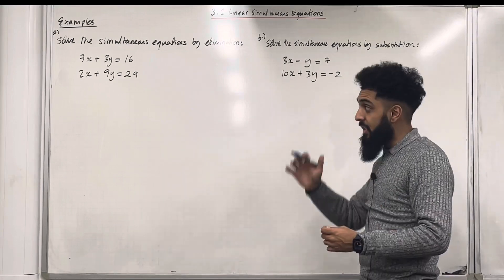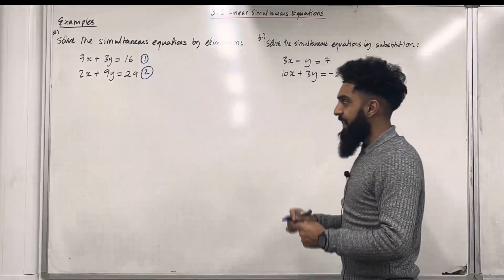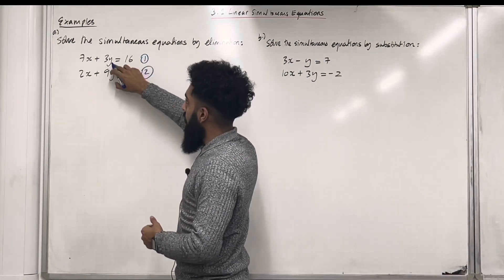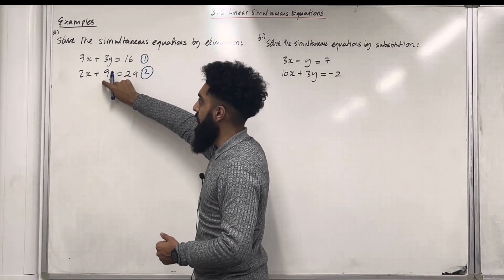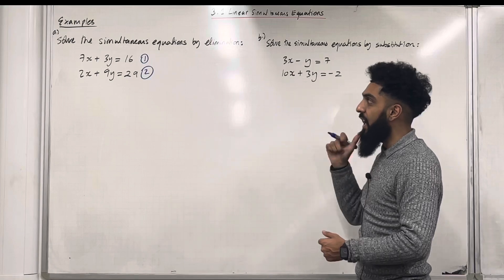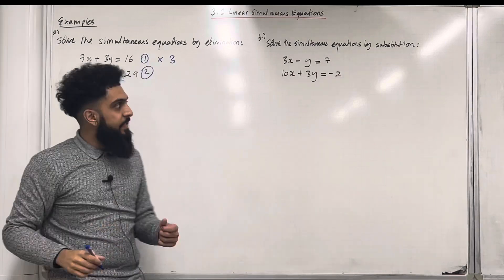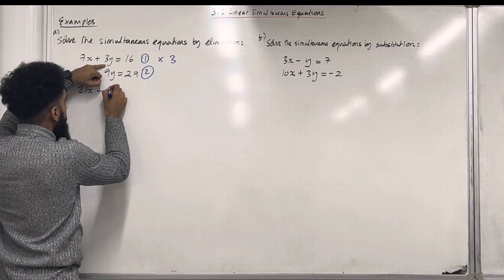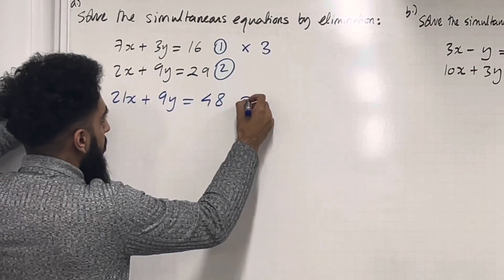The very first step is to label your equations. So I've got equation 1 and equation 2. The second step is to have a look at the x's or the y's. I'm going to have a look at the y's. The coefficient of y in equation 1 is 3, and the coefficient of y in equation 2 is 9. I'm going to turn the coefficient of y in equation 1, which is 3, into a 9 by multiplying equation 1 by 3. So this gives me 7x multiplied by 3, which is 21x; 3y multiplied by 3 is 9y; and 16 multiplied by 3 is 48. I'm going to call this equation 3.